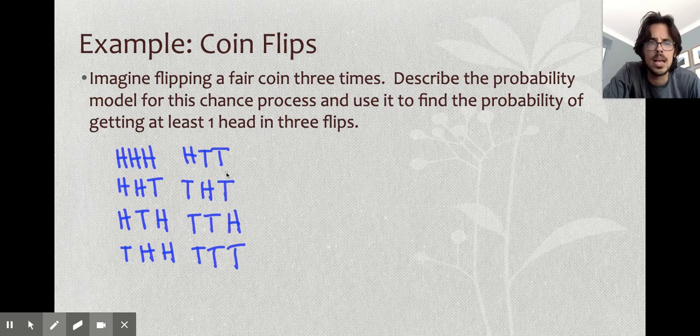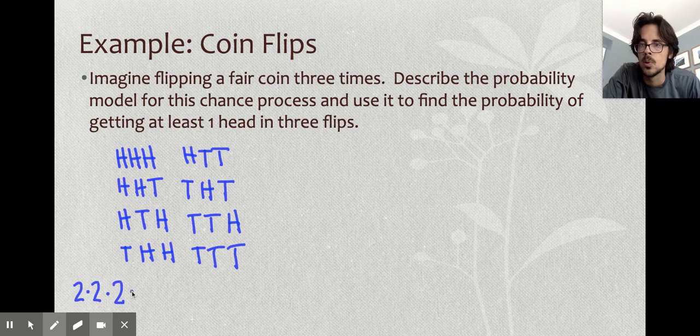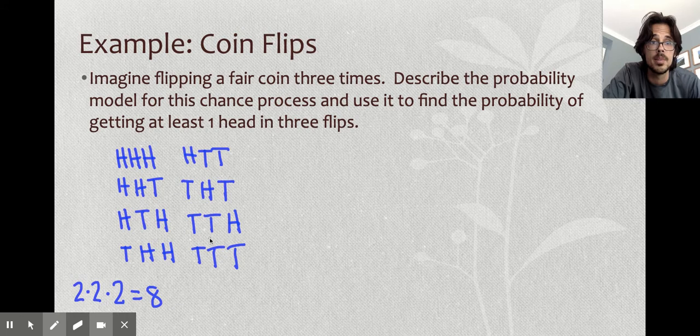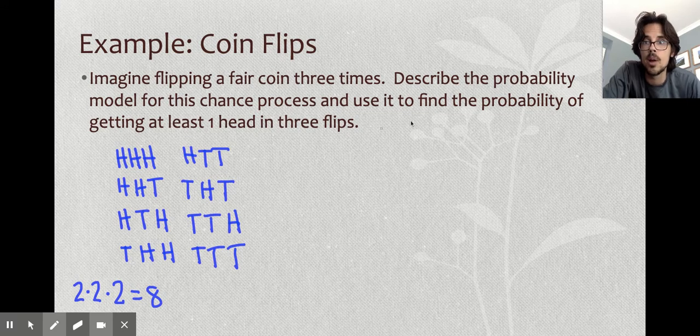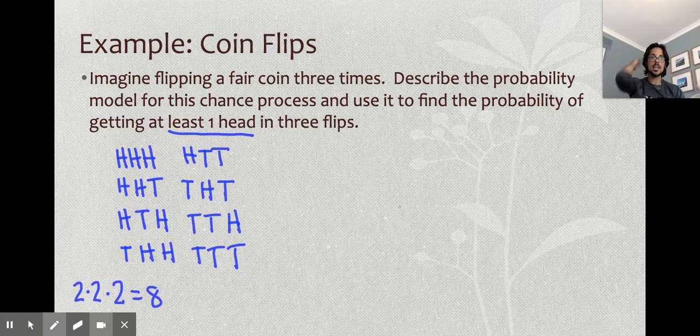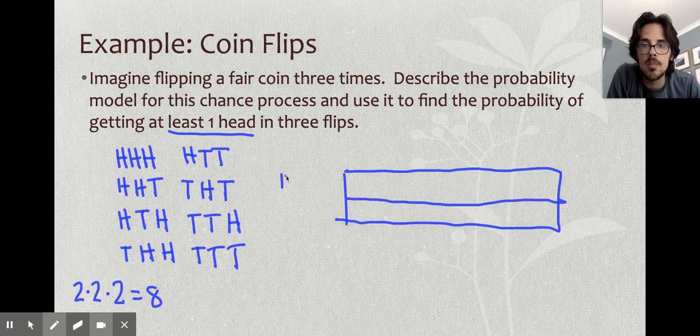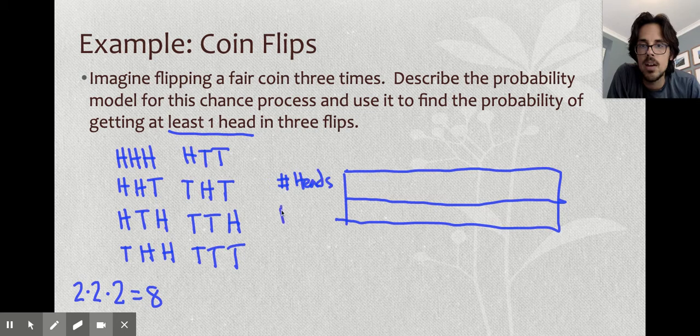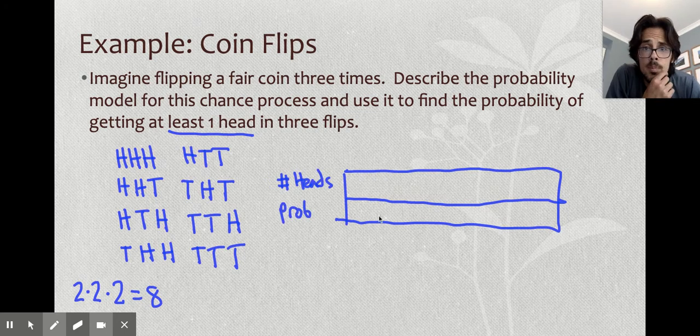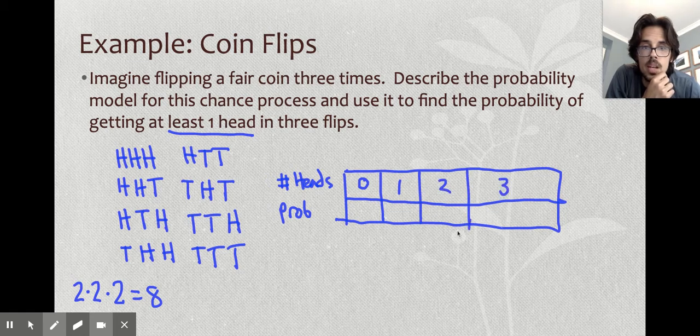This is a list of all of the possibilities. Thinking about Algebra 2, when we look at the number of possibilities total, we had two choices for the first one, two for the second one, and two for the third one. There should be eight possible outcomes altogether. They say to describe the probability model for this chance process and use it to find the probability of getting at least one head in three flips. So if I'm going to make a probability model, those are generally written as tables. We care about how many coins land on heads, and the probability of that happening. The least number of coins landing on heads we can get is zero, or we could have one, two, or three.